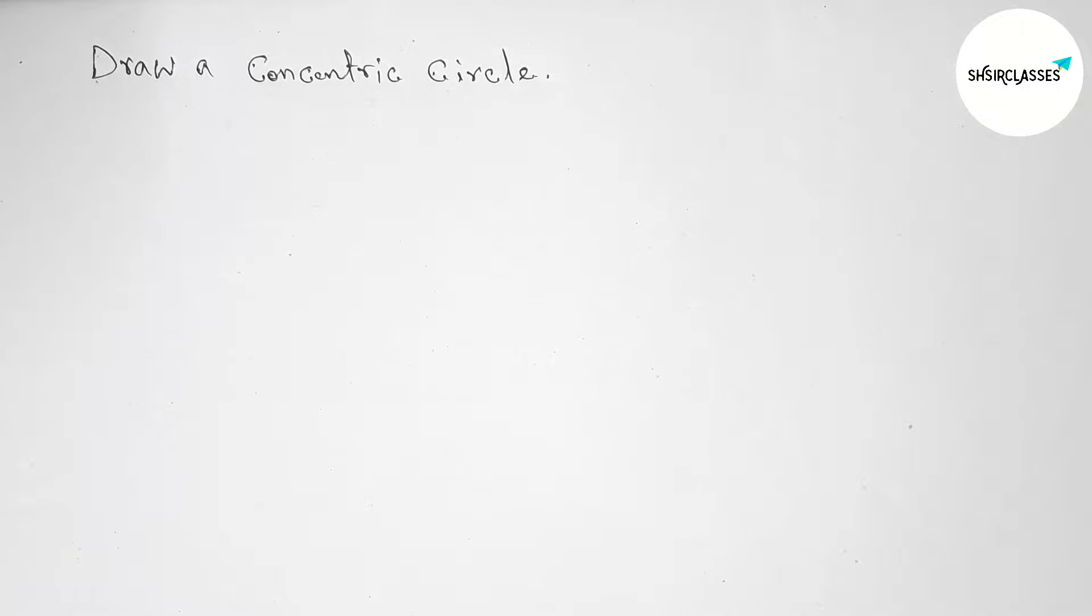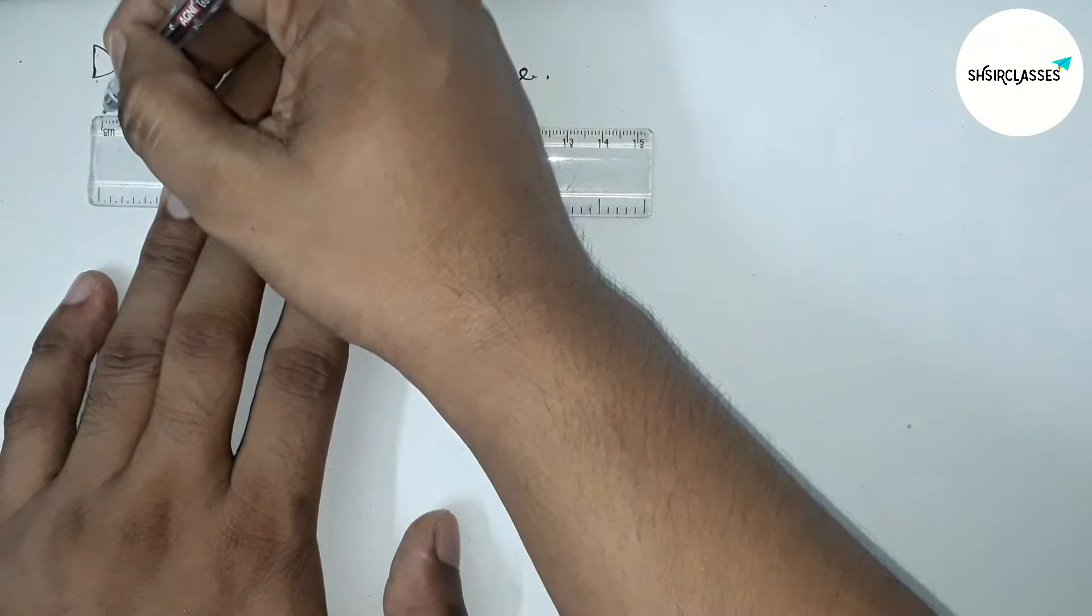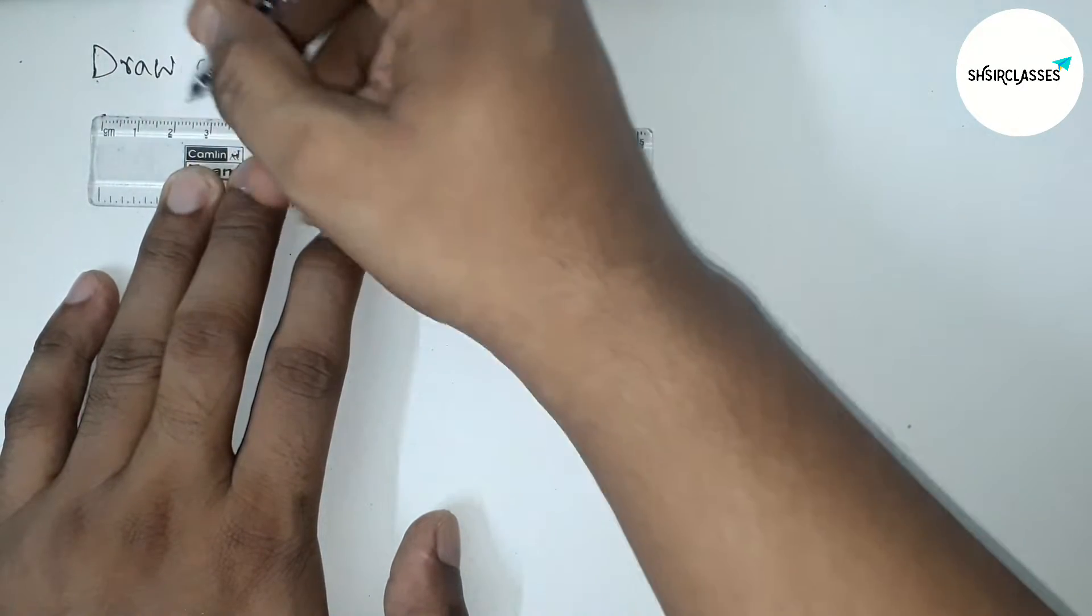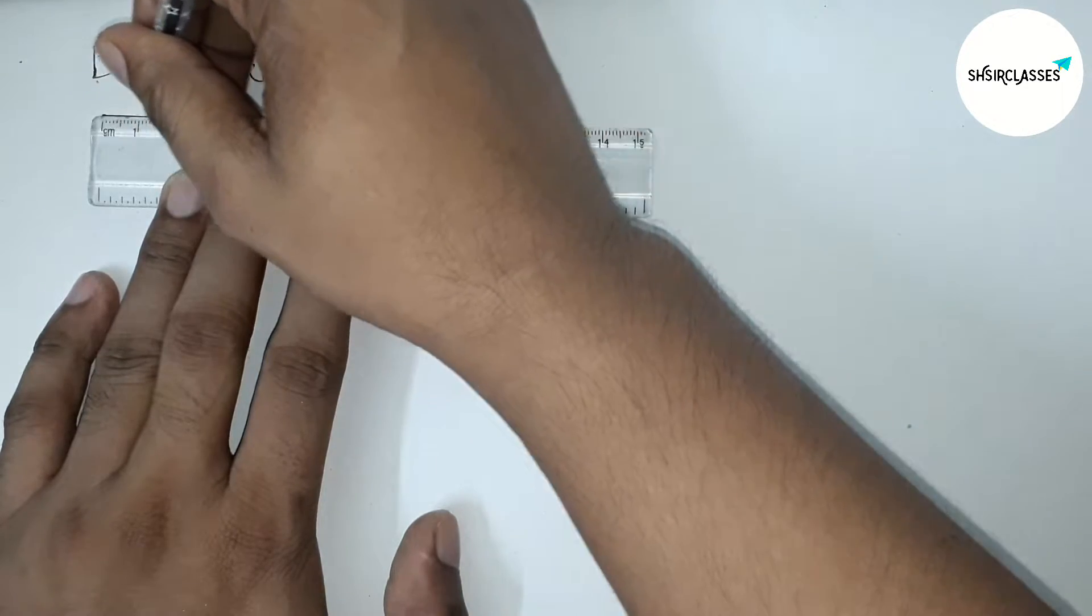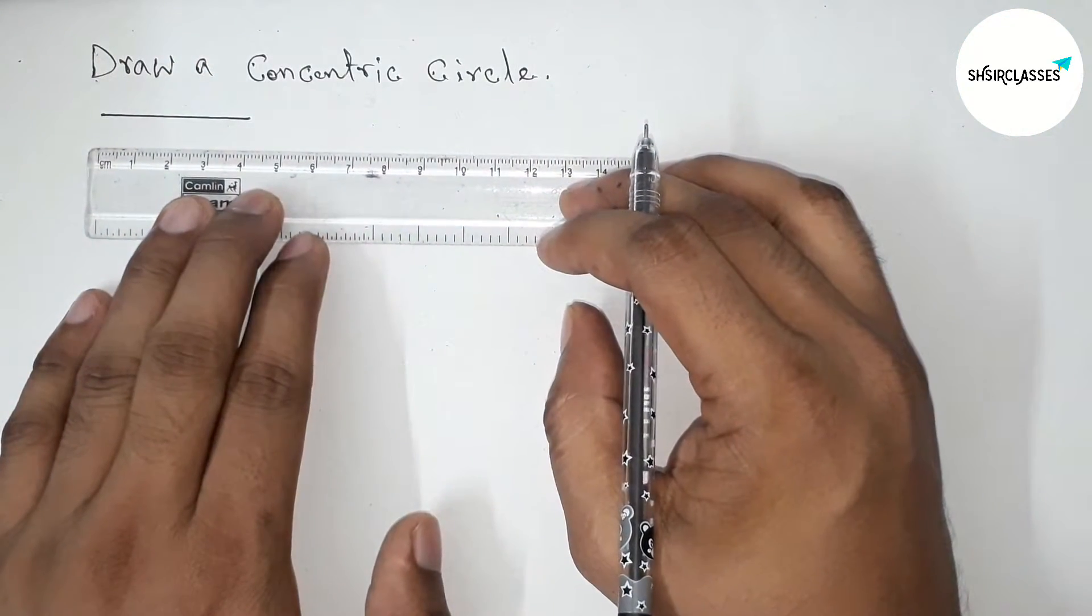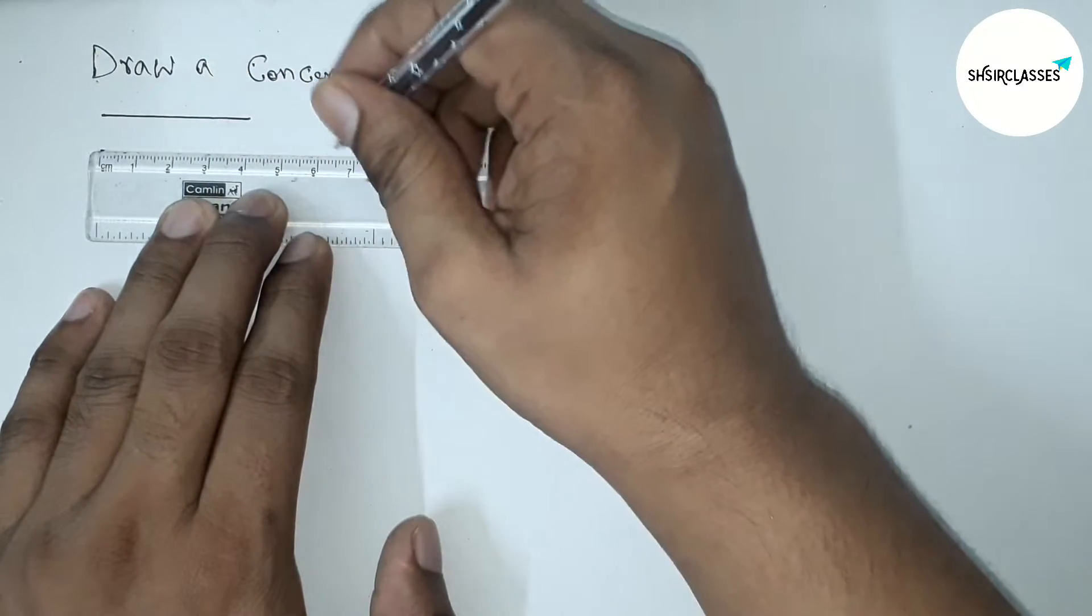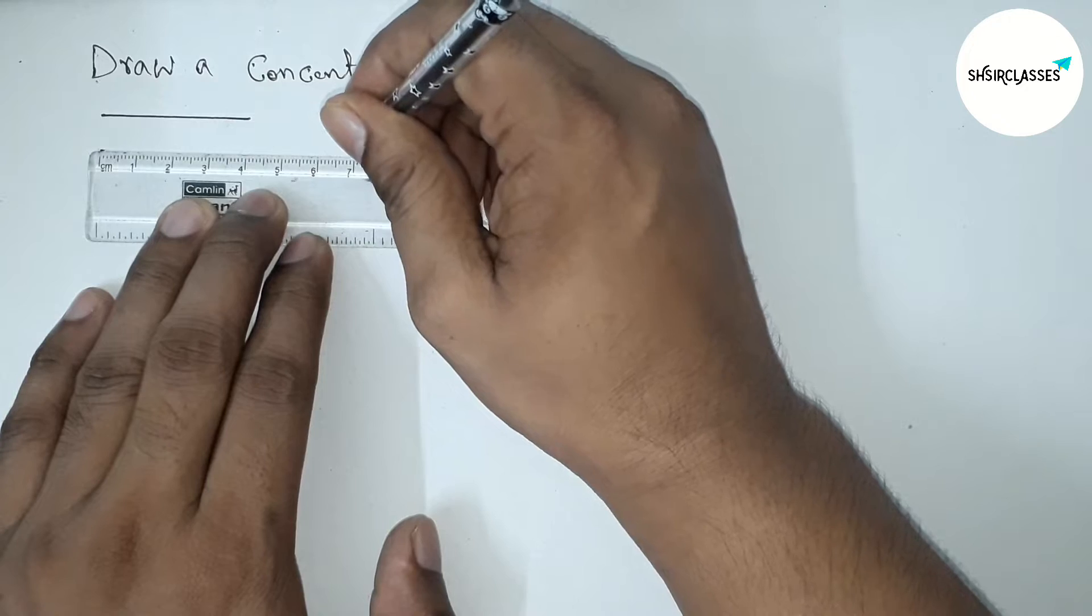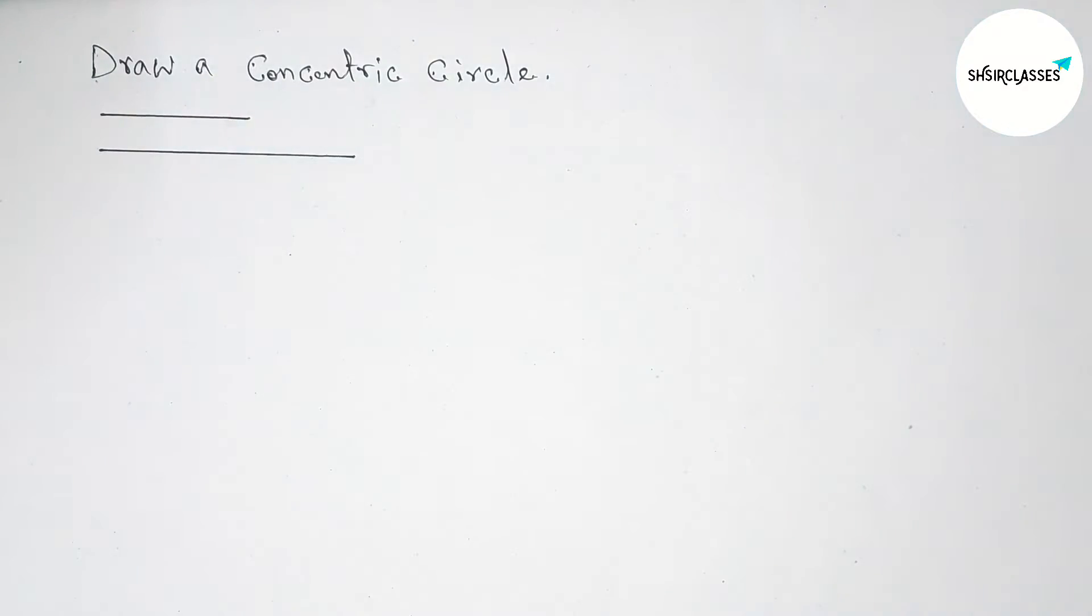First of all, taking here two radii. The first radius is four centimeter and the second one is seven centimeter. You can choose another two radii as your choice.